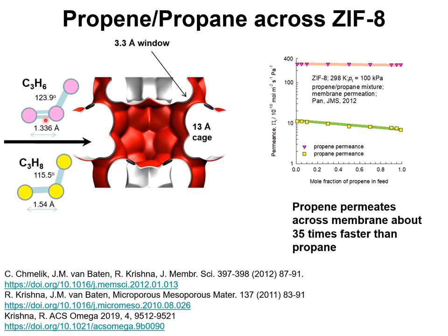Due to subtle differences in bond lengths and bond angles, the permeance of propene is 35 times larger than that of propane. Therefore, ZIF-8 is an appropriate choice for separating propene/propane mixtures in membrane constructs.